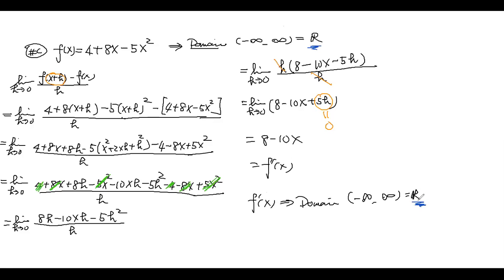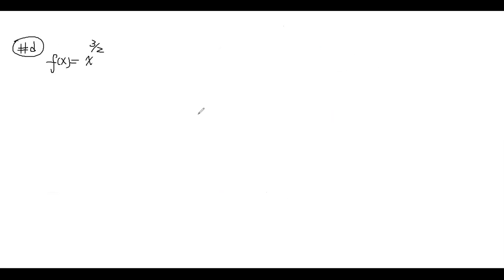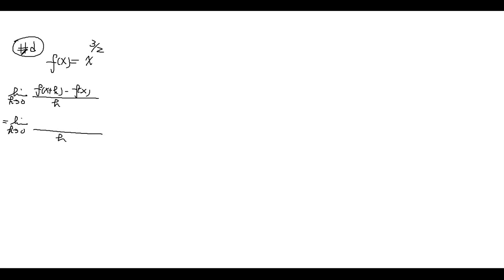Now let's look at the next problem. This is a power function — kind of like a three-and-a-half power, not an exponential function. Using the limit definition: limit as h → 0 of [(x+h)^(3/2) − x^(3/2)] / h. Since we have square roots, we can use the conjugate technique to simplify.